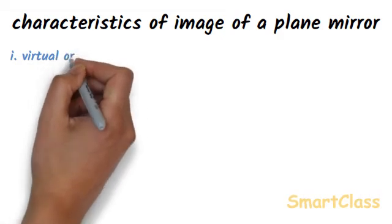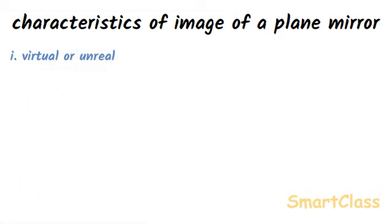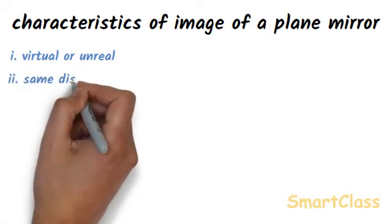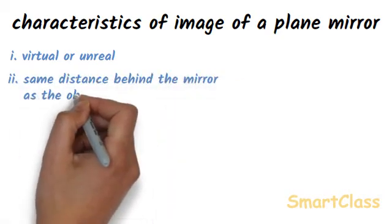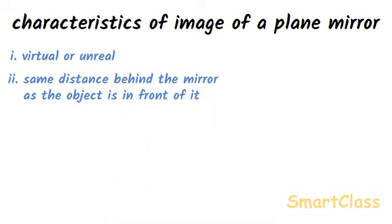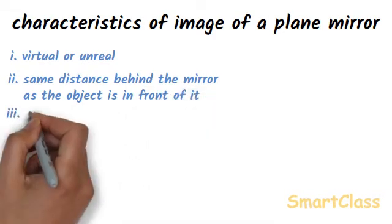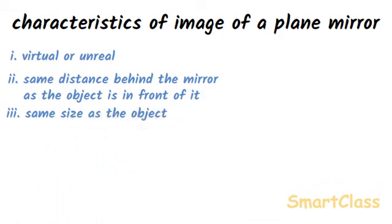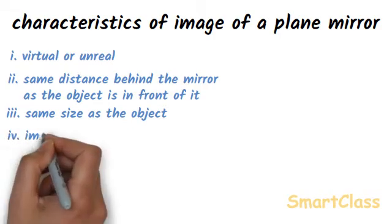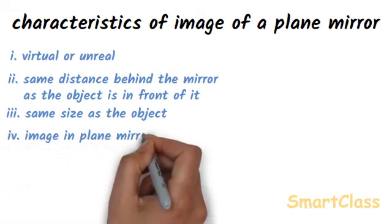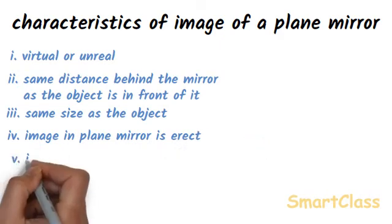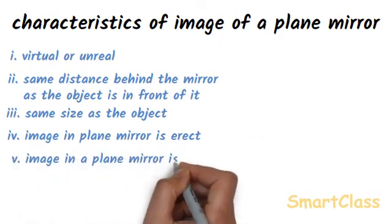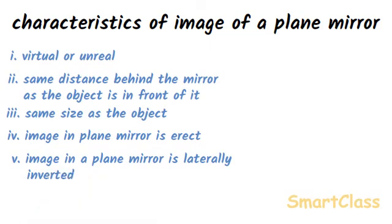The mirror image formed in a plane mirror is virtual or unreal — it cannot be obtained on a screen. The image formed in a plane mirror is at the same distance behind the mirror as the object is in front of it. The image in a plane mirror is of the same size as the object — it is neither enlarged nor diminished. The image in a plane mirror is erect, that is, same side up, and it is laterally inverted, that is, reversed sideways with respect to the object.